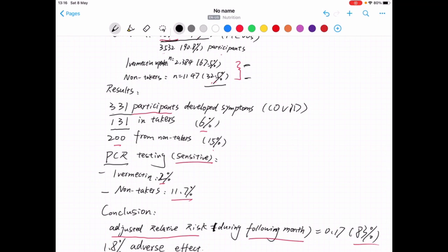And then, as a result, in Ivermectin takers, it's only 2% who develop COVID-19 according to PCR. And in non-takers, 11.7% developed COVID-19.